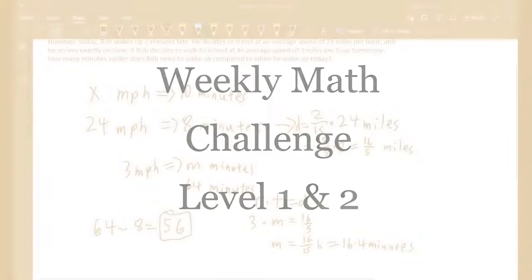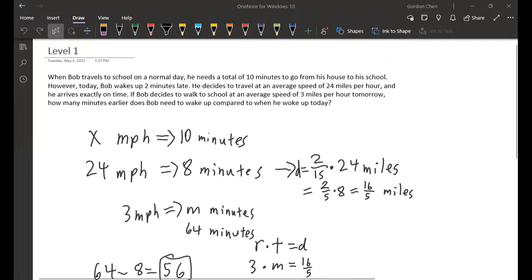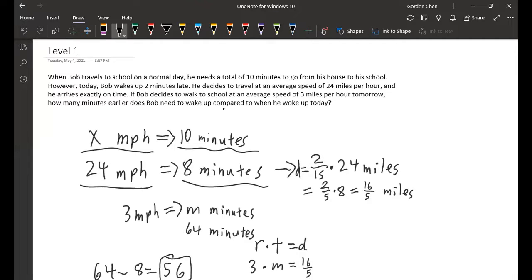So we have Bob travels to school on a normal weekday. He needs 10 minutes and we're not given his speed. Today he wakes up 2 minutes late and he gets there on time, so that's 8 minutes of travel time. He travels at 24 miles per hour, so we're given his speed.